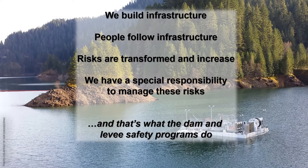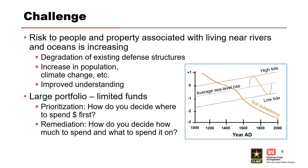Risks to people and property associated with living near rivers and oceans are increasing. Why? Degradation of existing defenses, increase in population, climate change, and improved understanding. By 'improved understanding,' it's not necessarily that the risk changed, but our understanding of it changed. A good example is what happened in New Orleans during Katrina — levies failed with weaknesses we didn't know about, including overtopping and erosion behind flood walls leading to failure.